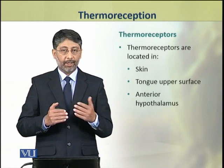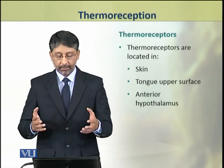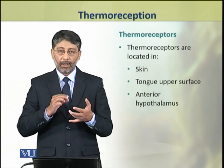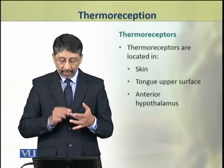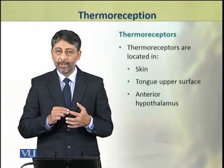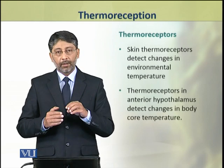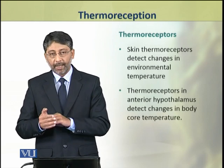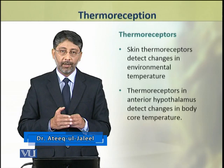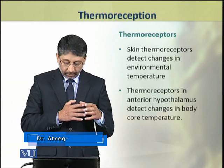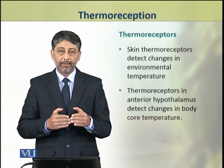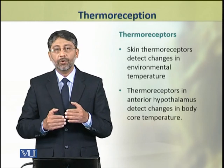Thermoreception takes place with the help of thermoreceptors. Thermoreceptors are located in the skin, on the upper surface of the tongue, and they are also present in the anterior hypothalamus. The skin thermoreceptors detect changes in environmental temperature, while the thermoreceptors in the anterior hypothalamus detect changes in the body's core temperature.